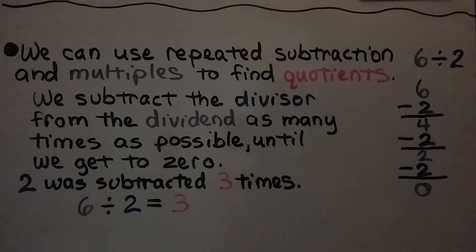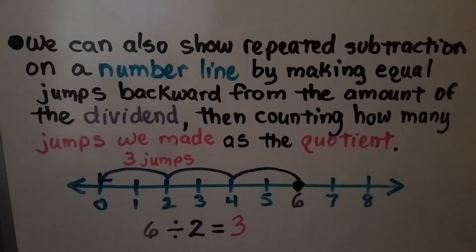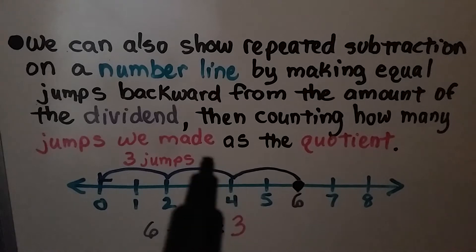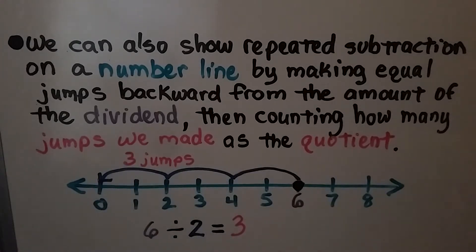We can use repeated subtraction to divide numbers with greater value, so we can repeatedly subtract greater multiples. We can also show repeated subtraction on a number line by making equal jumps backward from the amount of the dividend. We make equal jumps backward, and the size of the jump is going to be the divisor. We start at 6, we jump a 2, and we keep jumping 2 until we get to 0. We count how many jumps we made as the quotient. We made 3 jumps. 6 divided by 2 is equal to 3.